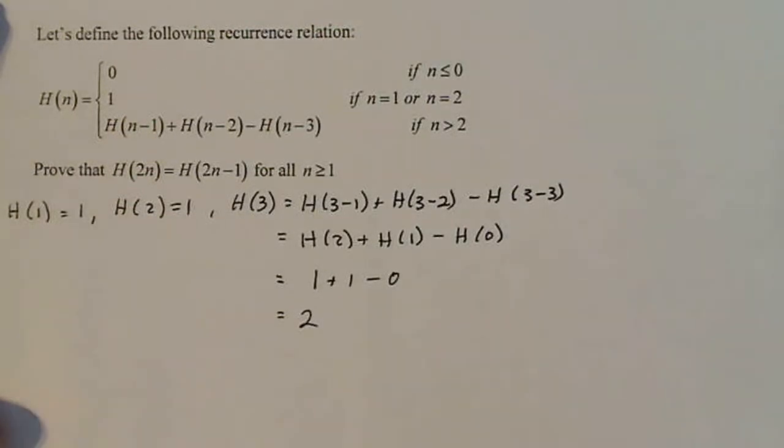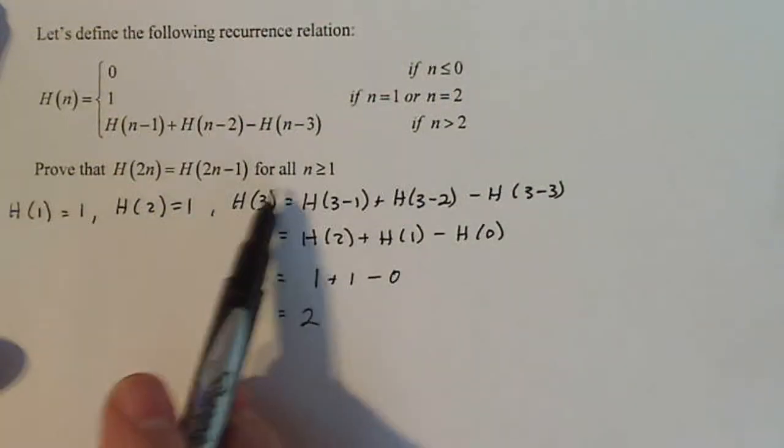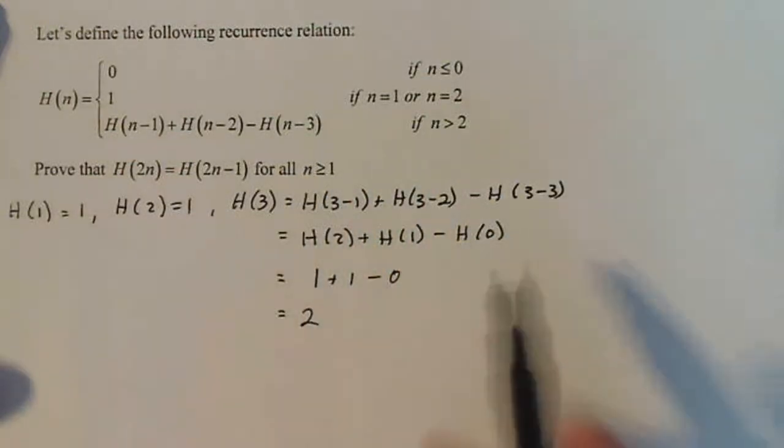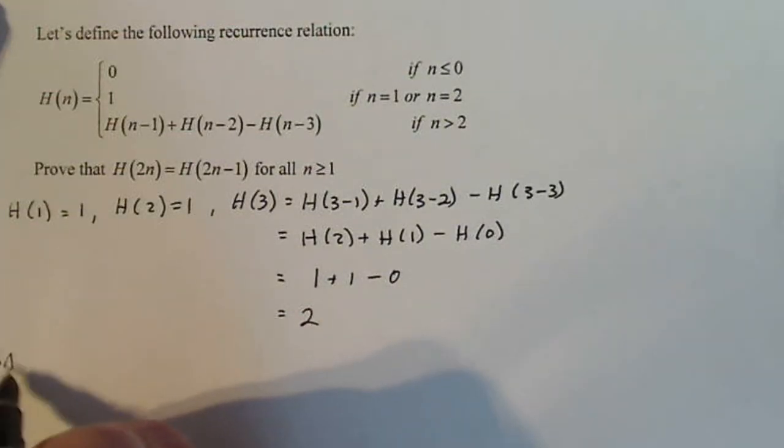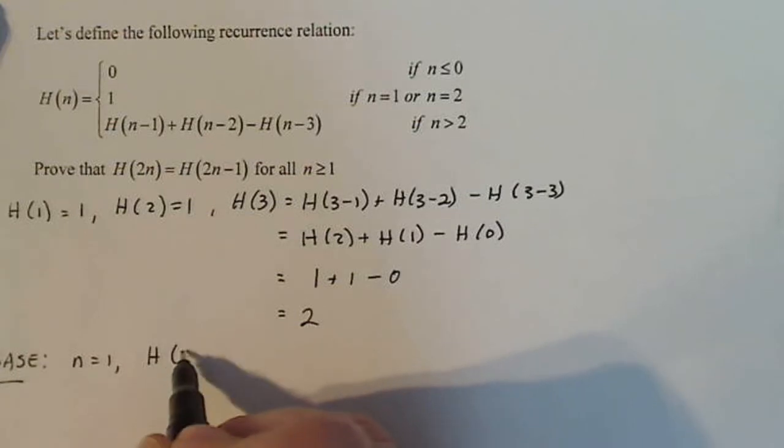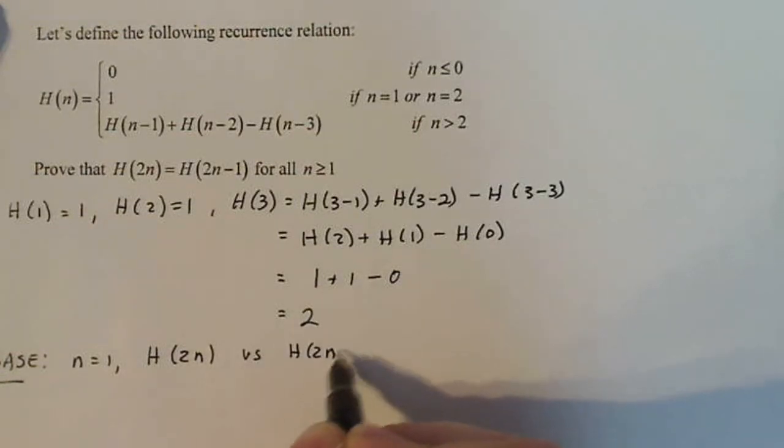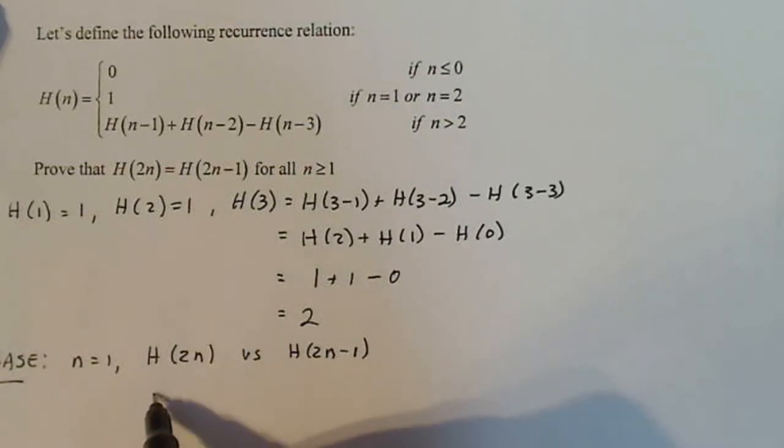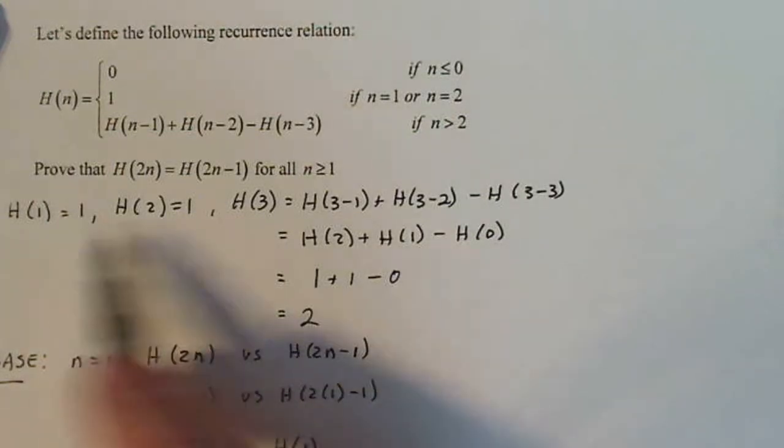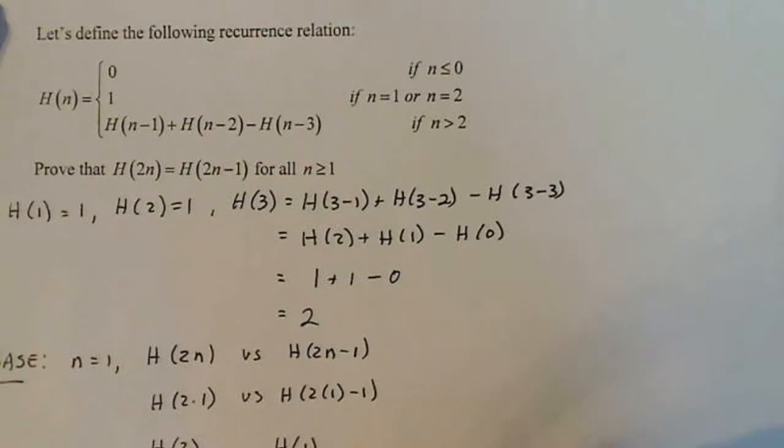So I know how to work with a recurrence relation. And I have to show that this is true for all n ≥ 1. So I'm going to start with n = 1 and do n = 1 and 2, and then see what happens. Maybe I just need 1, I don't know. Let's see. If I'm going to do the base case, I'm going to say n = 1. That means H(2n) is supposed to equal H(2n-1) for that value. So H(2n), well, that's going to be H(2·1) versus H(2·1-1). H(2·1) is 2, and this is going to be H(2-1), which is 1. So H(2) is 1, H(1) is 1. They're equal. That one checks off.